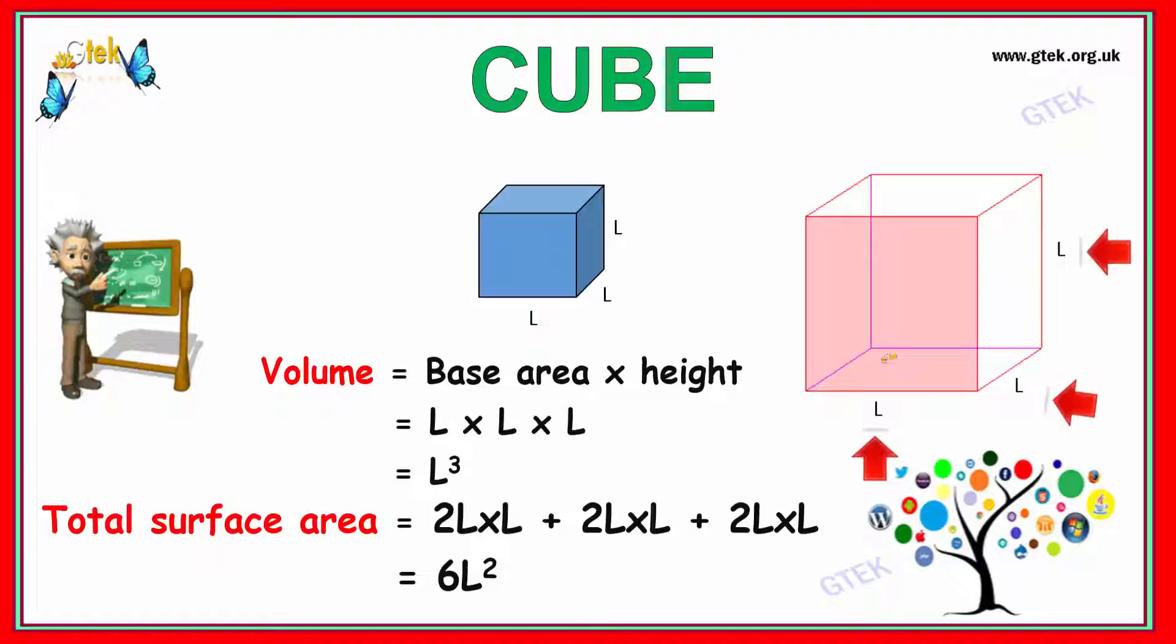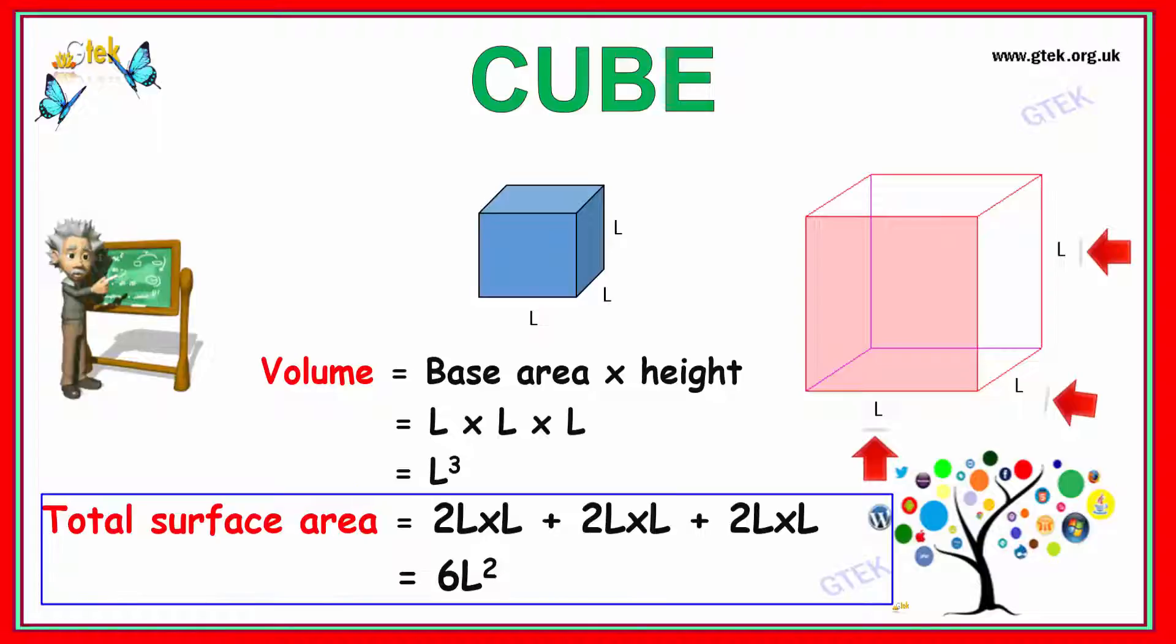If you talk about the surface area, you've got 6 sides. So obviously you have 6 L squared. The surface area of the cube is 6 L squared. That's 2L² + 2L² + 2L², so 6 L squared.